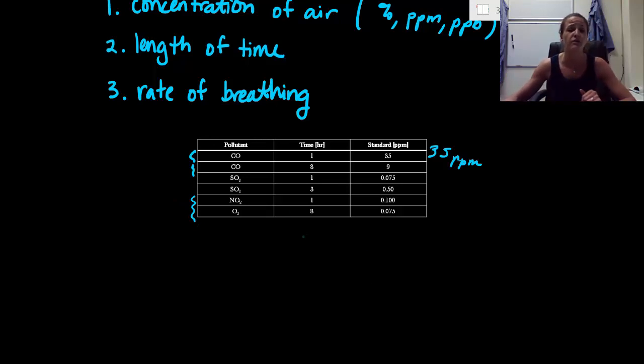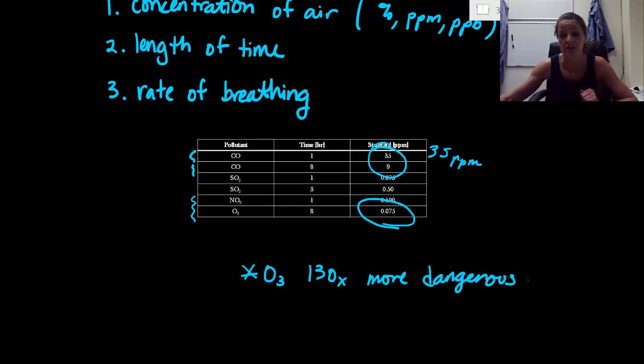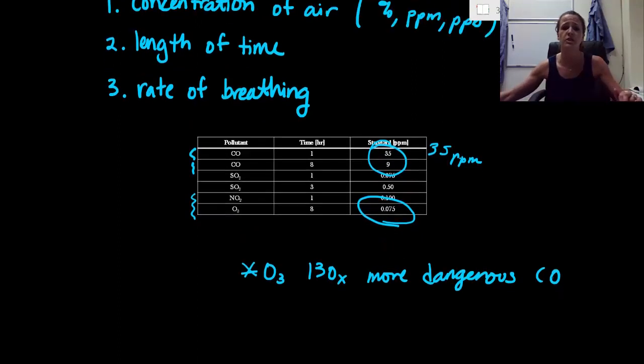For ozone, if you're exposed to something for eight hours, you can only handle a ppm of 0.075. So if we were to actually compare our concentration of ozone compared to our concentration of carbon monoxide, I think right away we would be able to see that ozone or O3 is 130 times more dangerous than carbon monoxide is. And so even though it is something really tiny and we have a small amount of it in our atmosphere, it is so much more lethal than carbon monoxide is. Our body does not know what to do with ozone. Ozone is super good for us up high in the atmosphere. But when it's down here and we're breathing in and out, our body as humans cannot handle it.